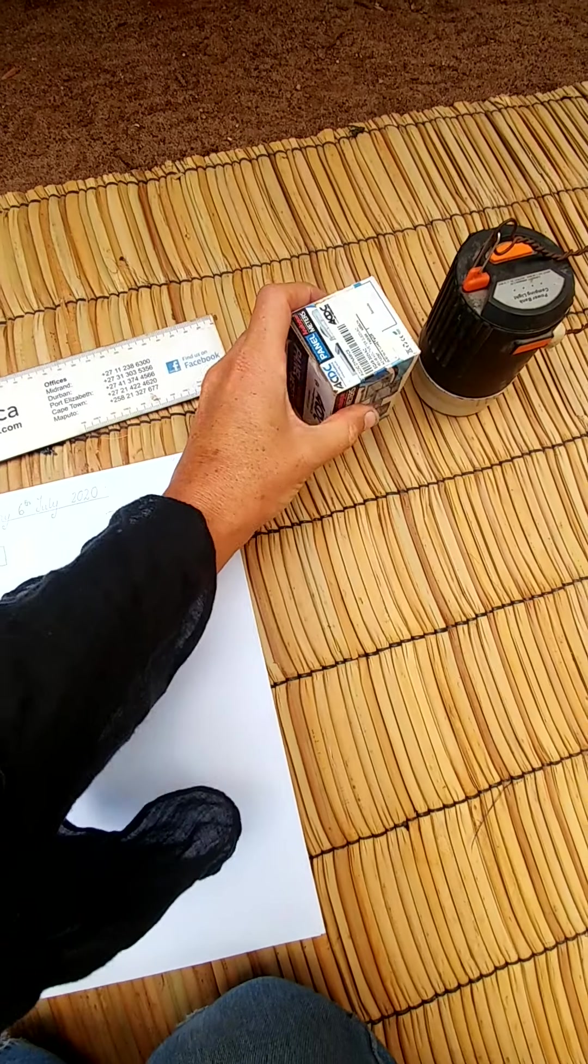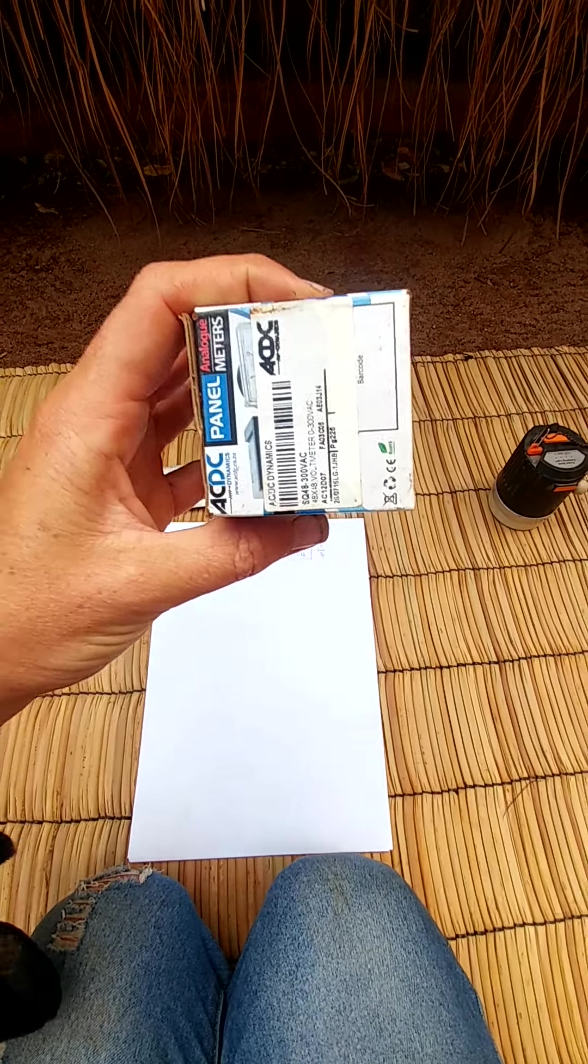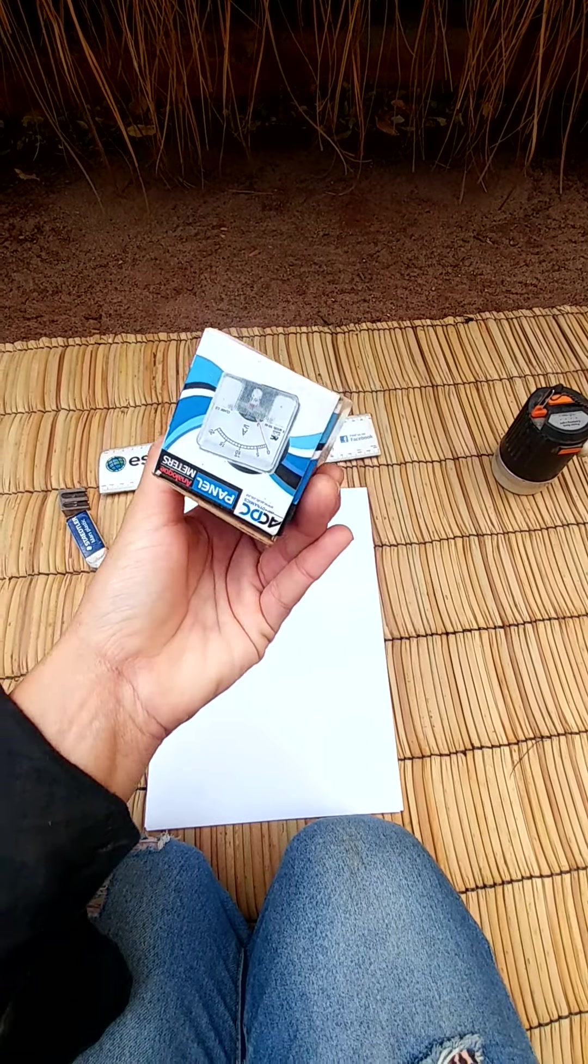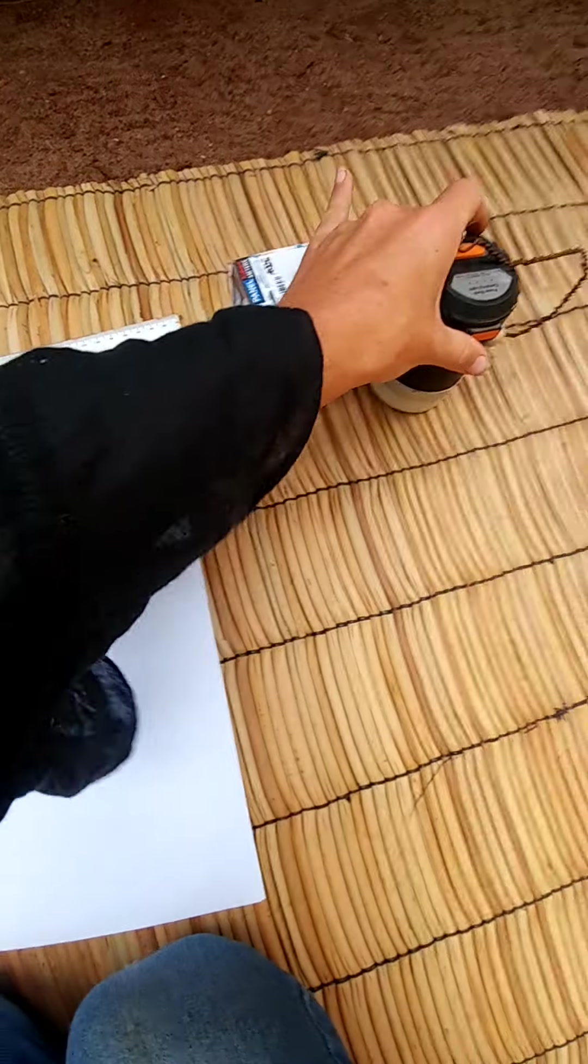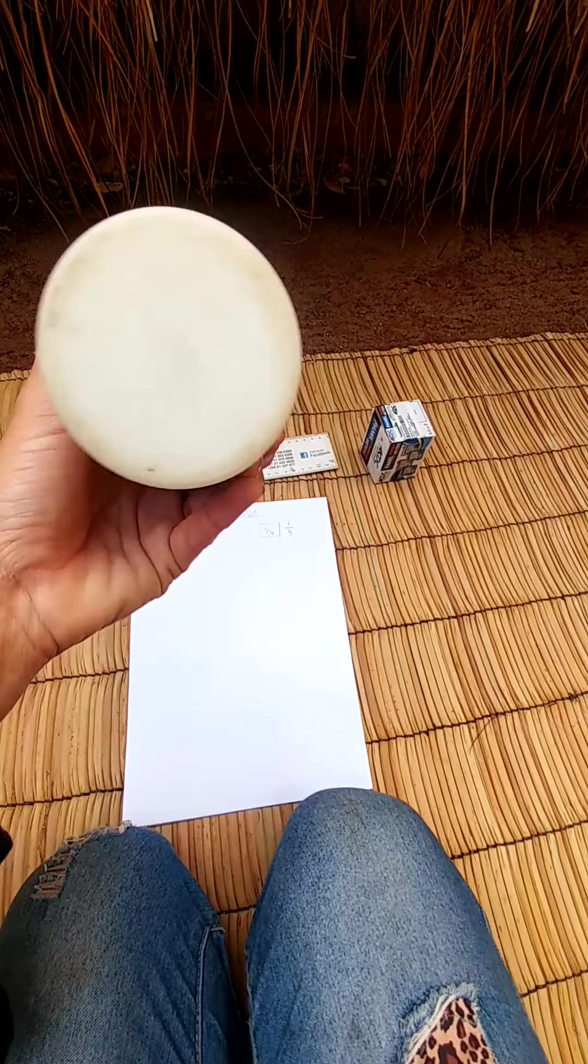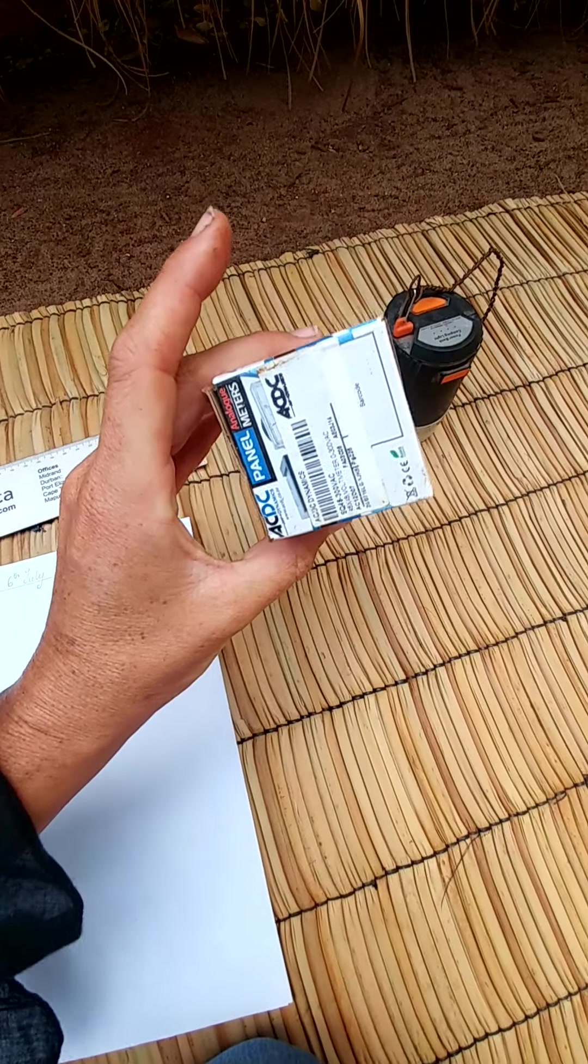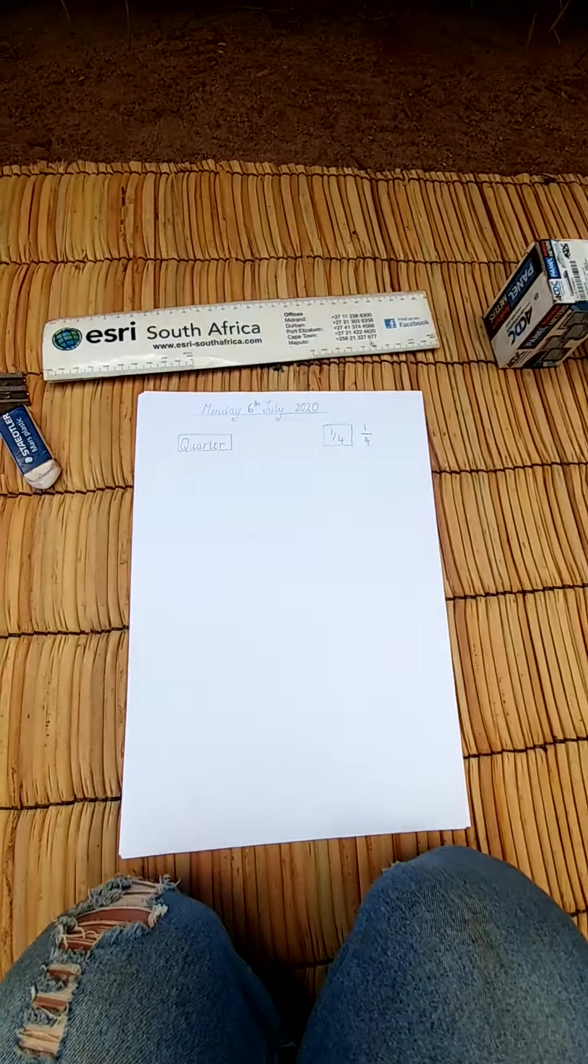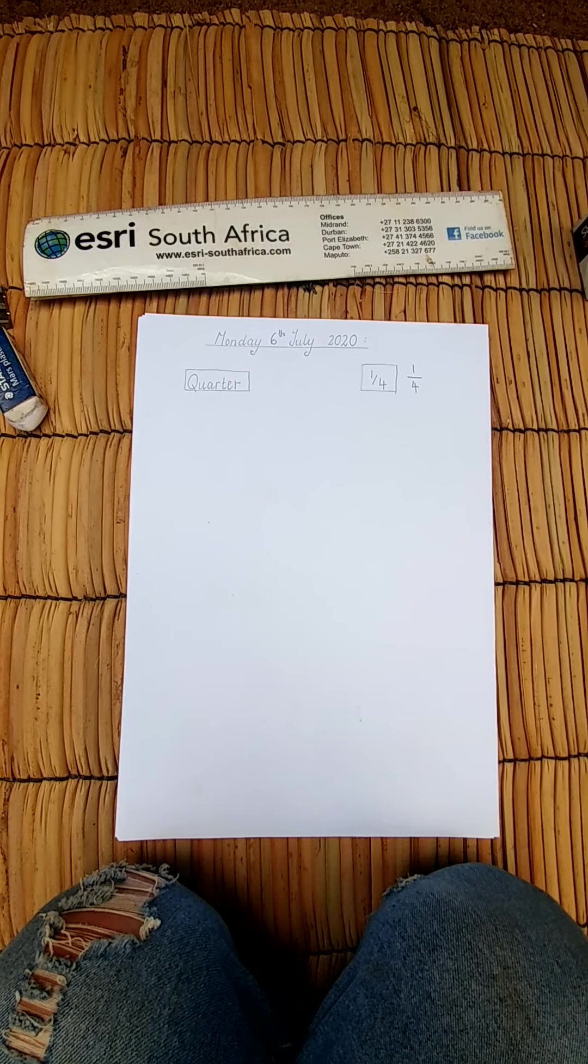You'll need a ruler and I want you to go around your house and look for a square and a circle. Teacher Tammy's found a square and a circle and we're going to use these and I'm going to show you how to draw them down.